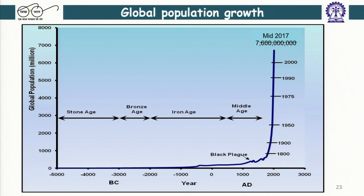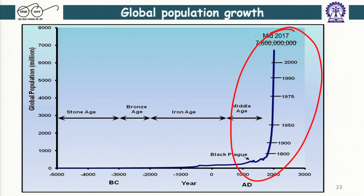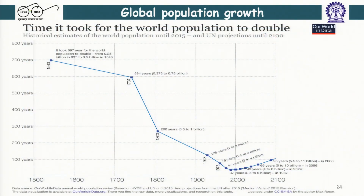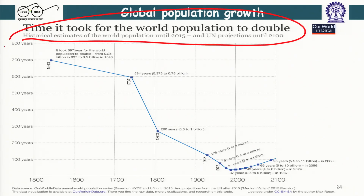In terms of global population growth, it is the last 200 years where we saw a huge increase in population. With the increase in population there is a lot of demand for resources, and that demand for resources actually leads to a lot of environmental implications. If you look at the time it took for the world population to double, this data is from a UN document with projections up to 2100.